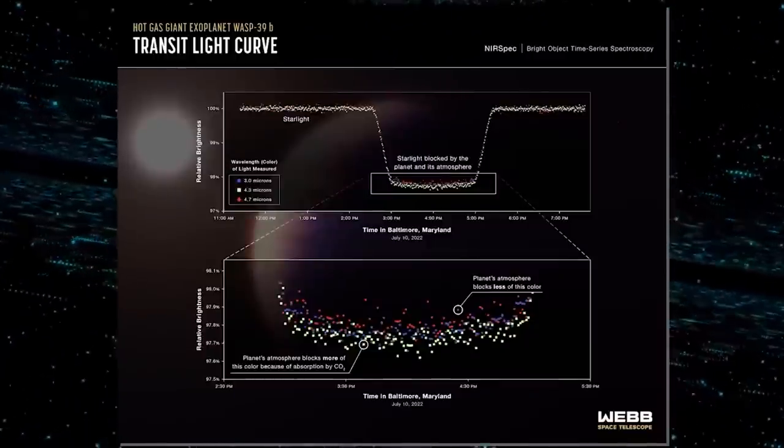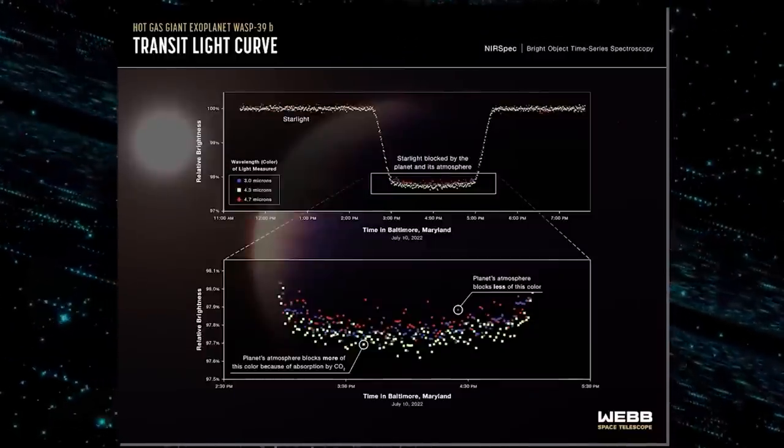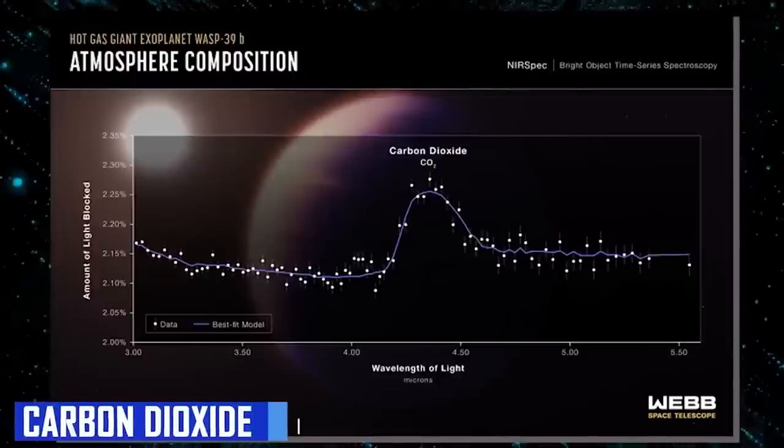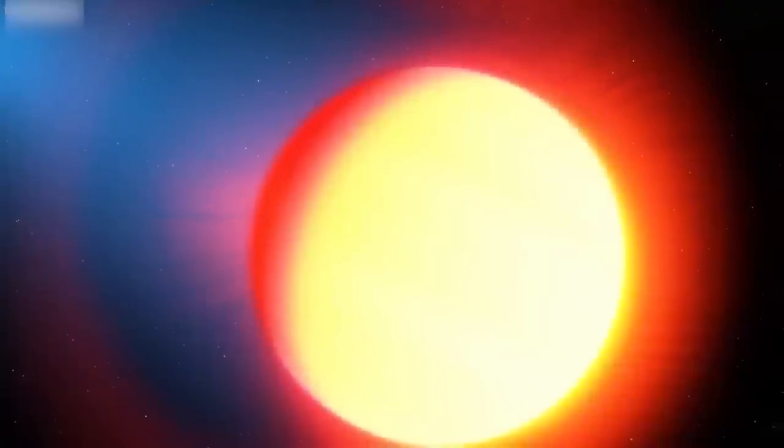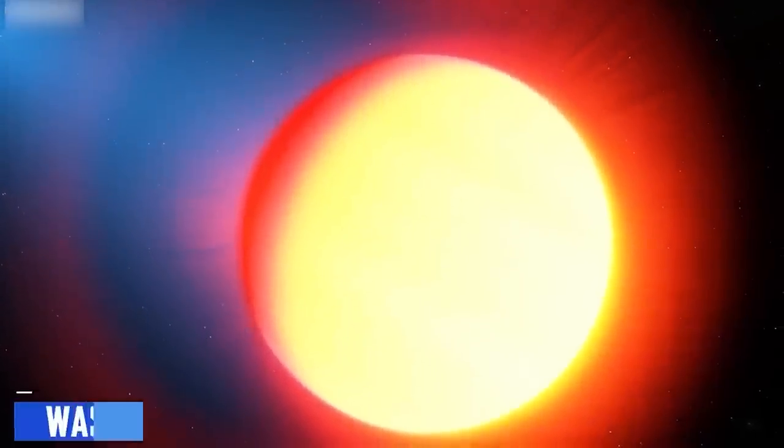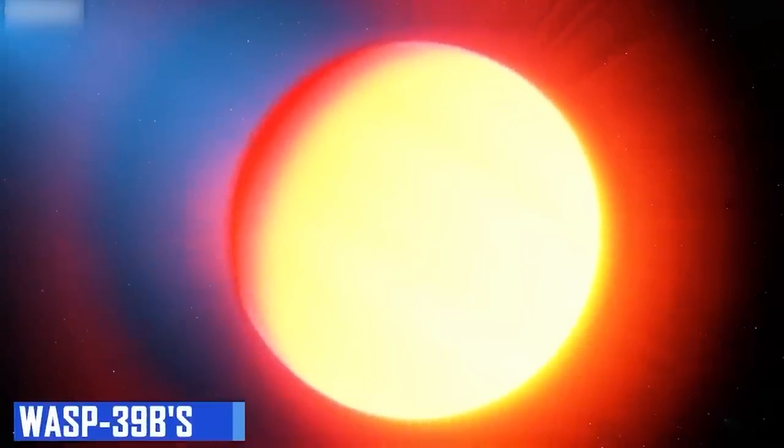This discovery illuminates the planet's makeup. The study published in Nature shows that Webb may be able to identify and analyze carbon dioxide in the weaker atmospheres of tiny, rocky planets. Before we get into this incredible result, let's review some of WASP-39b's important traits.